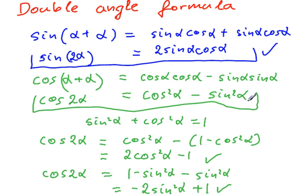It's just sometimes it is convenient to express cos of double angle in terms of either sine squared alpha or cos squared alpha. So remember that.